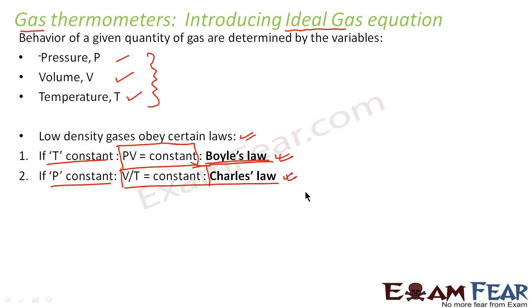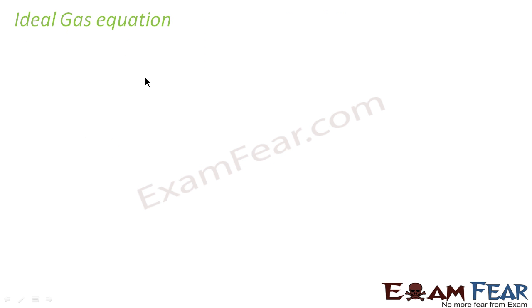These are the two laws generally obeyed by low density gases. However, when we go towards high density gases, a deviation from these behaviors is observed. Now let us look exactly at what the ideal gas equation is. If gases are used instead of liquid for measuring temperature, it is observed that they show the same readings regardless of which gas is used. Why is it so?